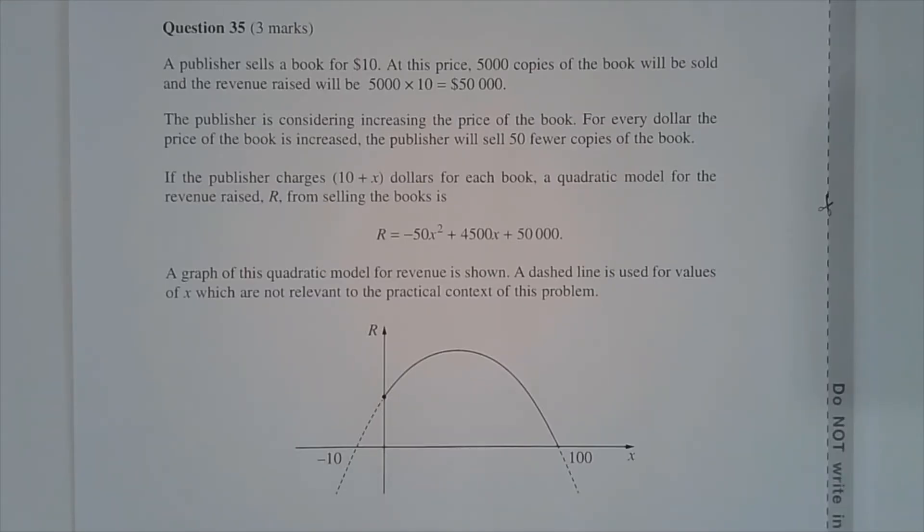If the publisher charges 10 plus X dollars for each book, a quadratic model for the revenue raised, R, from selling the books is R equals negative 50x squared plus 4,500x plus 50,000.